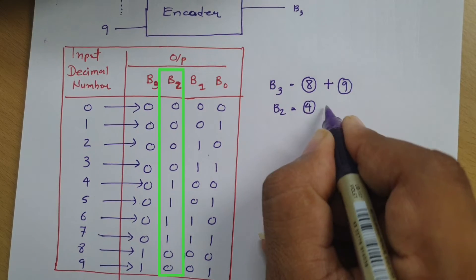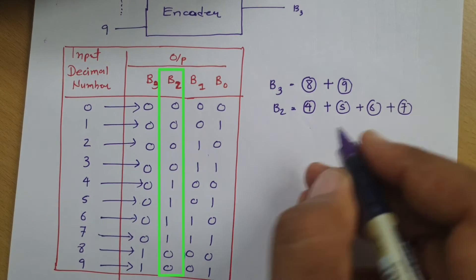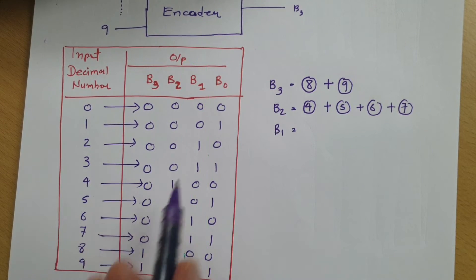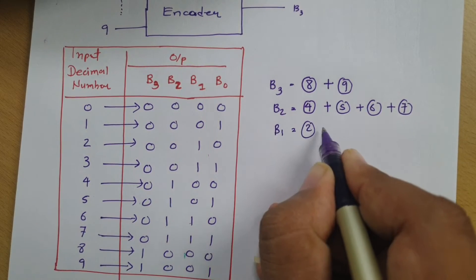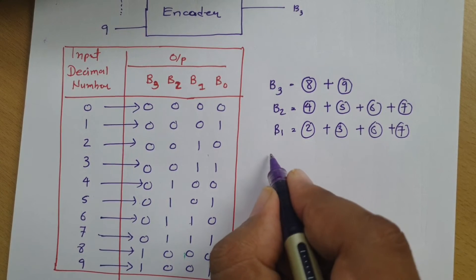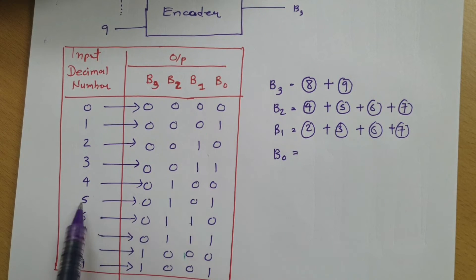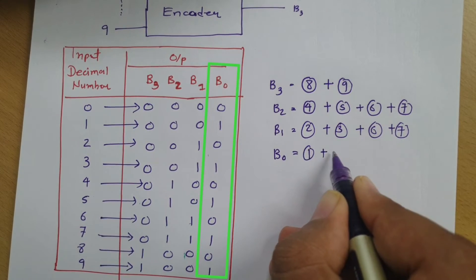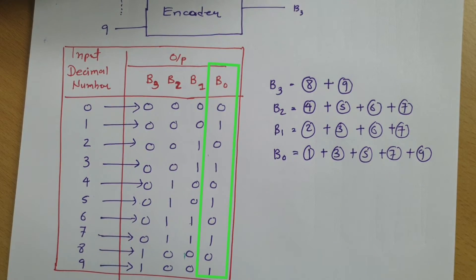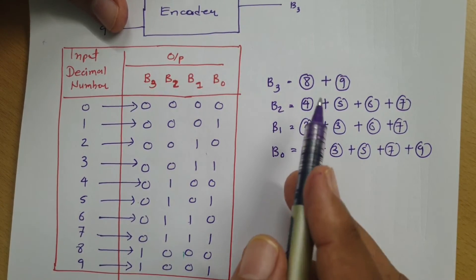So B2 is active high during terminals 4, 5, 6, and 7. For B1, it is active high during terminals 2, 3, 6, and 7 — so we need to OR those together. For B0, it is active high during terminals 1, 3, 5, 7, and 9, so ORing 1, 3, 5, 7, and 9 gives us B0.